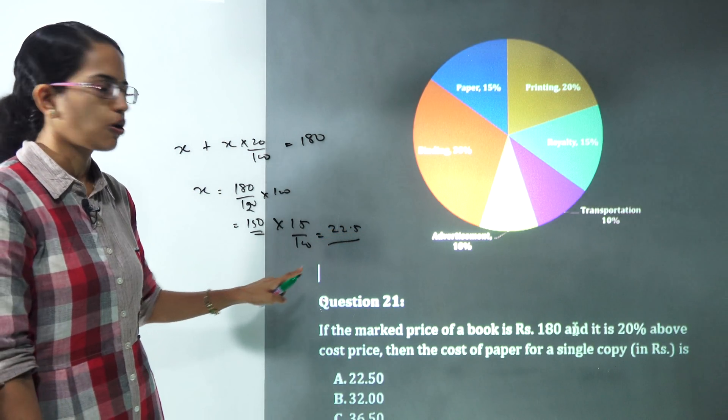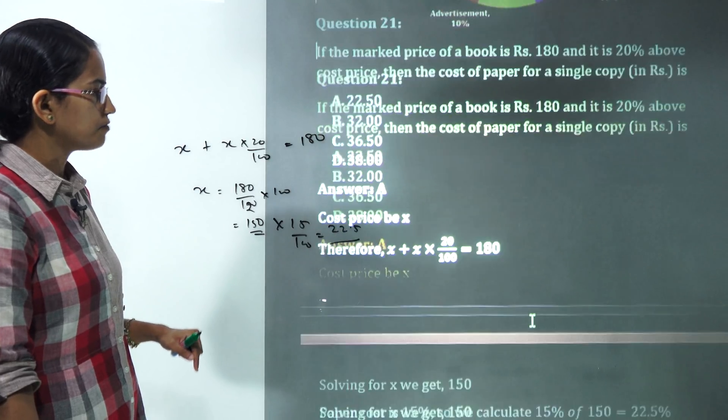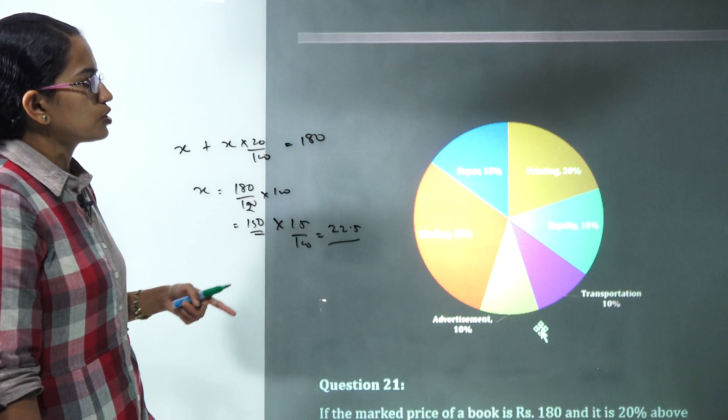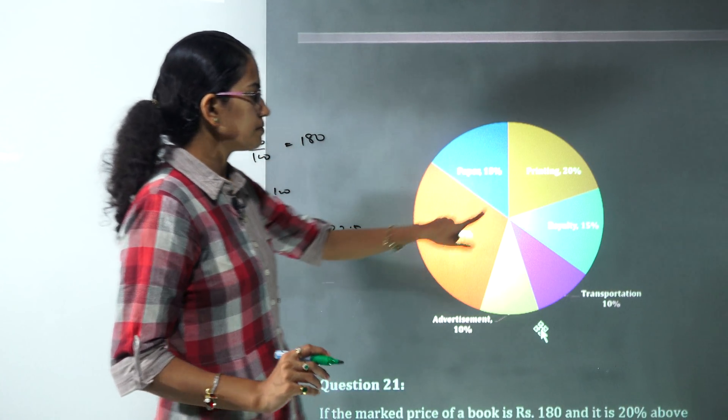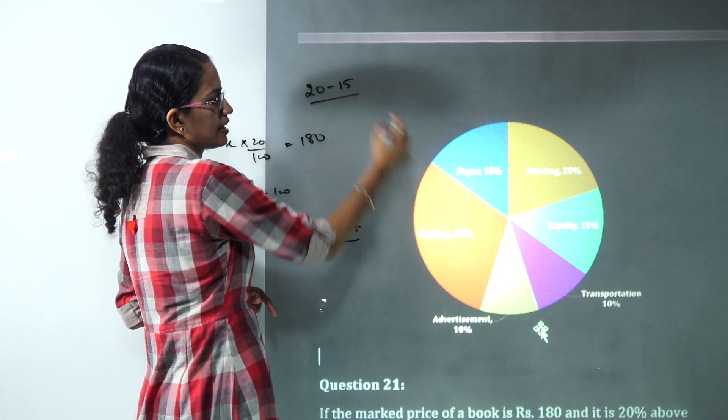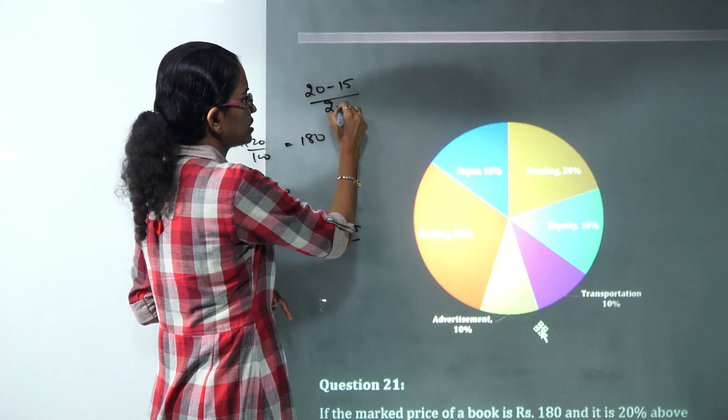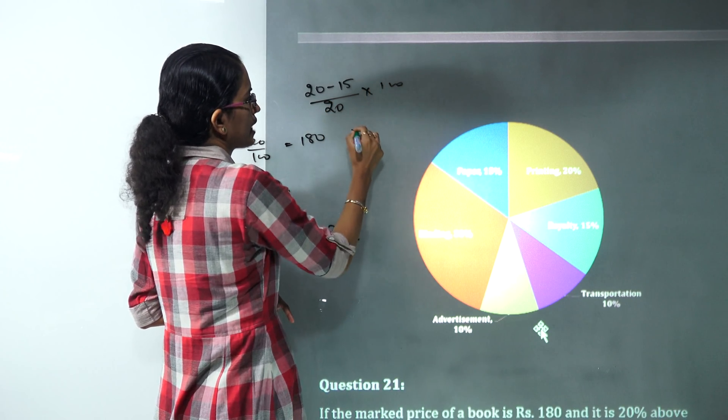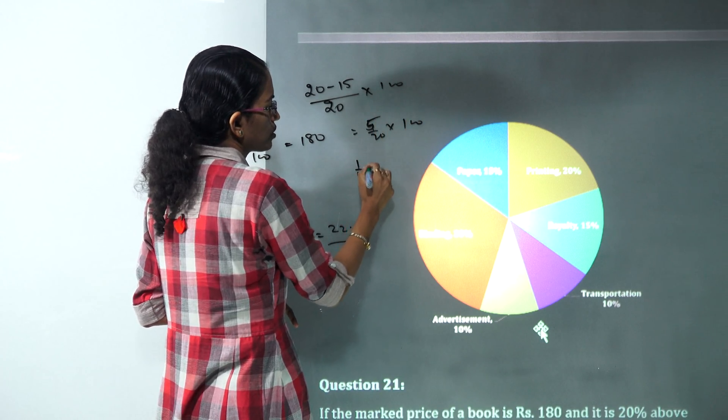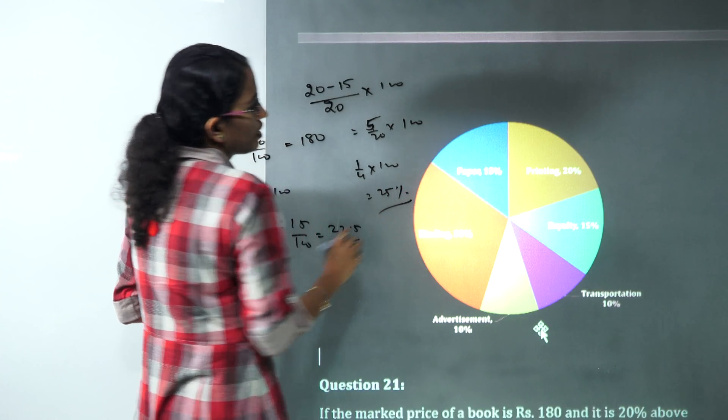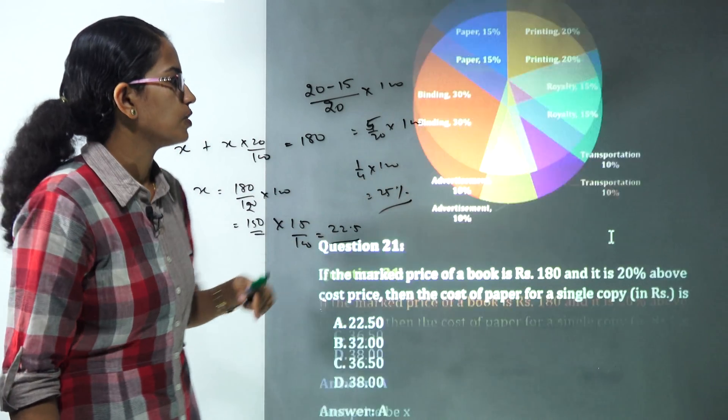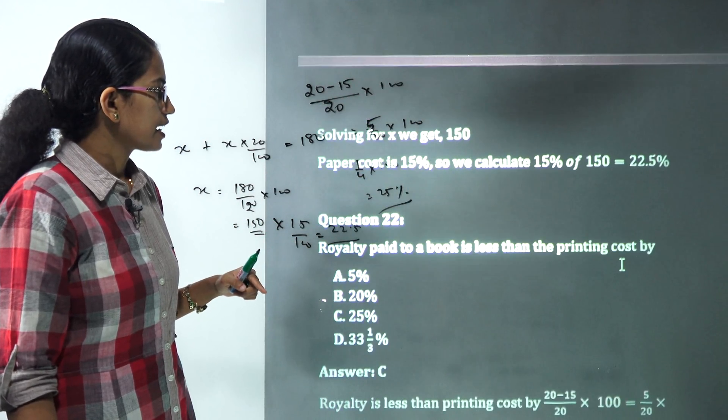The next question says royalty paid to the book is less than the printing cost by. The printing cost is 20%. Royalty is 15%. It would be 20 minus 15 divided by the printing cost that's 20 into 100 that is 5 by 20 into 100 that is 1 fourth of 100 that's 25%. You would have the royalty cost which would be 25% less as compared to printing cost. That's again a kind of direct question.